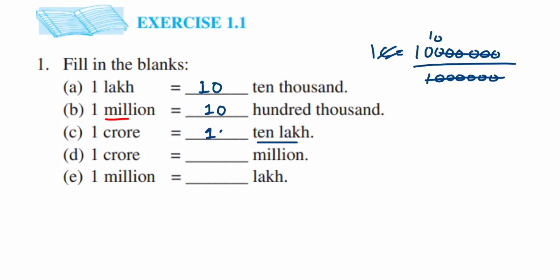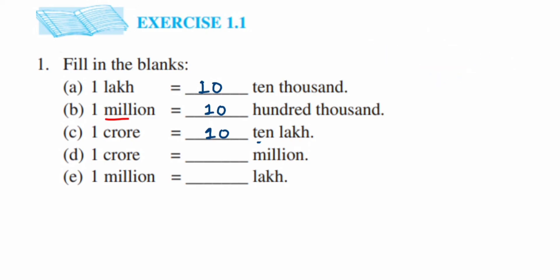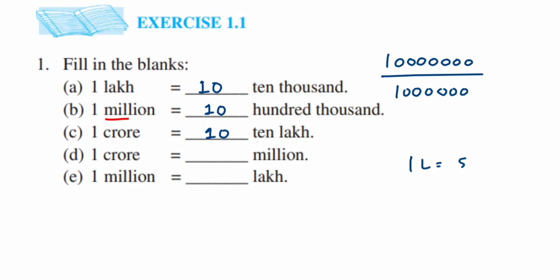So ten ten-lakhs are present in one crore. Next question: one crore is equal to how many millions? One crore has seven zeros. One million equals ten lakh, which has six zeros. Dividing: cancel six zeros from denominator and six from numerator — ten is left. So one crore equals ten million.